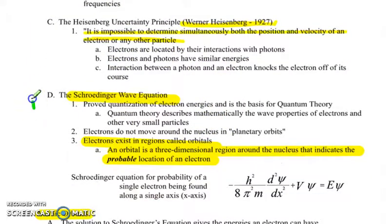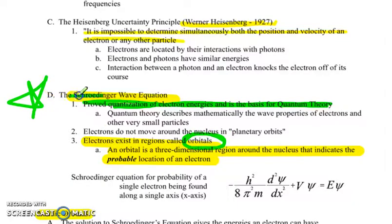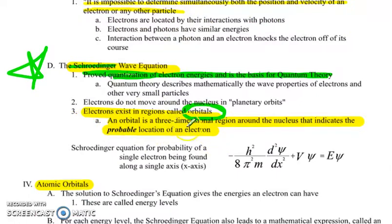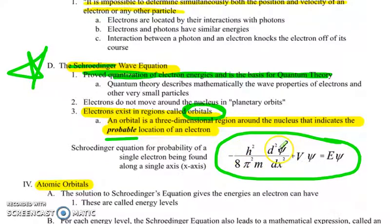And that brings us to Schrodinger. Schrodinger is our most important guy in recent history. He proved the quantization of electron energies, and it is the basis of his quantum theory. This is the leading theory we look at today. Quantum theory describes mathematically the wave properties of electrons and other very small particles. Electrons do not move around the nucleus in planetary orbits. Bohr was wrong about that. It's actually much more complicated. Electrons exist in dense regions called orbitals. This is your other key vocab word. Make sure you know that Schrodinger came up with the word orbitals while Bohr was looking at orbits. Schrodinger did a whole bunch of math, and here is just an example of the equation he used. Don't worry. We won't go into all that calculus-based math.